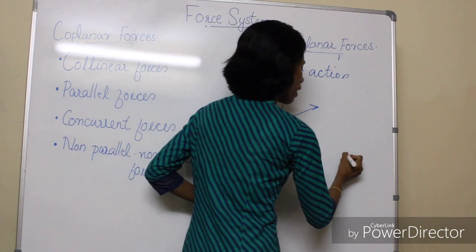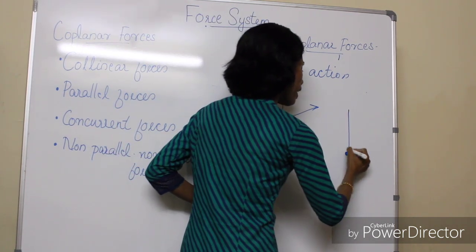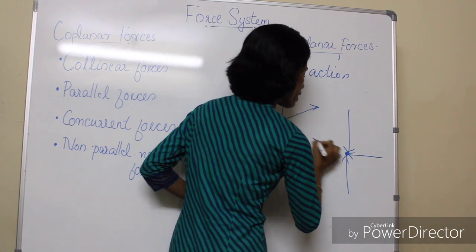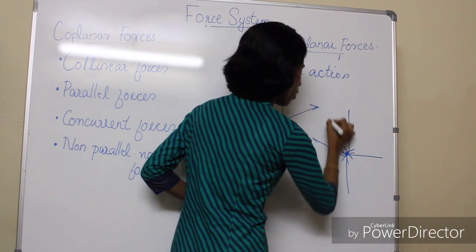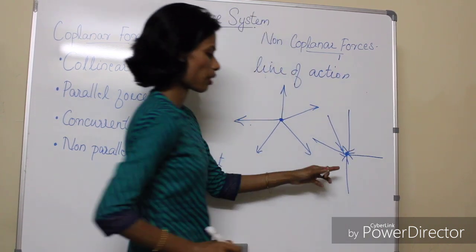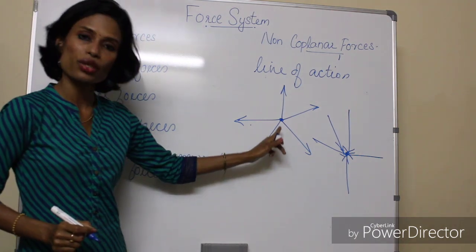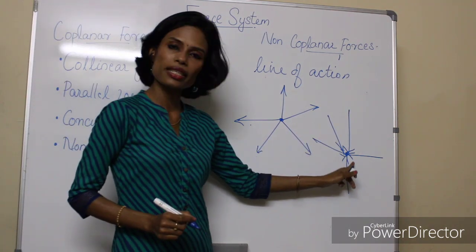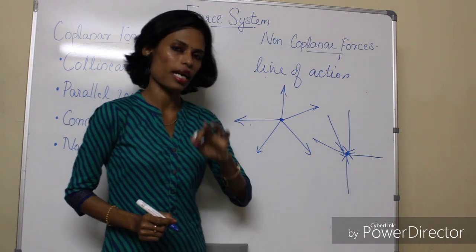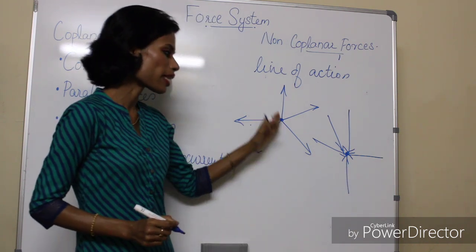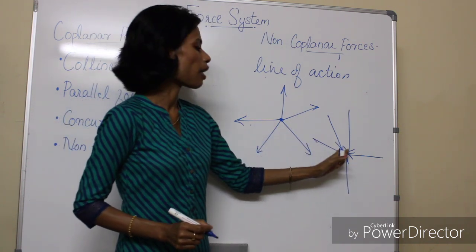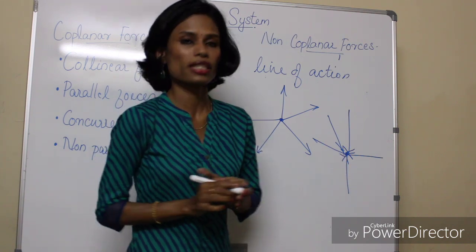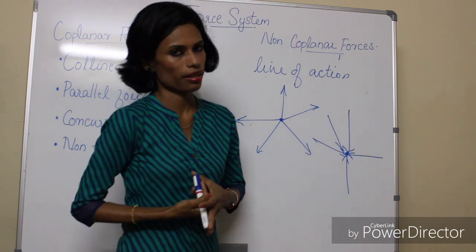In another case, all the forces are meeting at this single point. This is forces originating from a single point; this is forces meeting at a single point. Concurrent forces are forces which are acting at a single point or originating from a single point. This force system is known as concurrent forces.